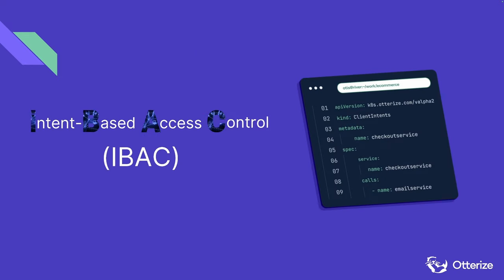This is where IBAC — intent-based access control — comes in. IBAC is a concept that aims to simplify and automate the management of access policies in distributed environments such as hyperscaler or cloud-native ecosystems. The idea is to provide a declarative way for developers to specify the list of calls they need to make to make the application work, similar to how Android or Apple developers specify device capabilities in an info.plist file. IBAC is made possible via a custom resource definition in Kubernetes — a YAML file called a client intent.